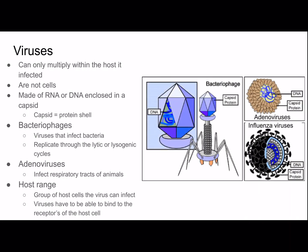This picture shows a few examples of viruses — bacteriophages, adenoviruses, and influenza viruses. In this example, all three have a capsid and the genetic material is DNA. But again, RNA can also be the genetic material.